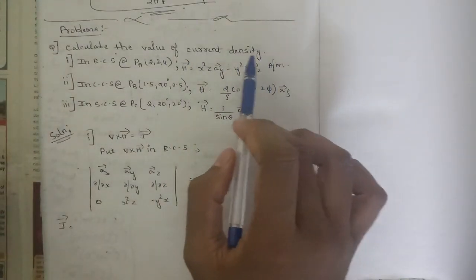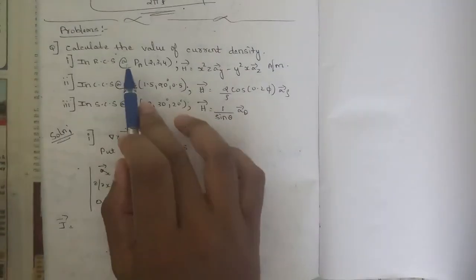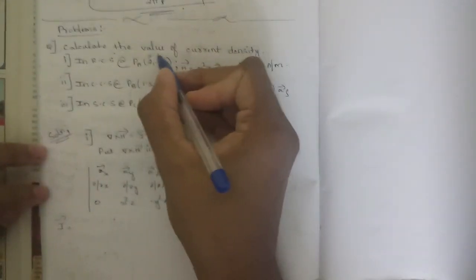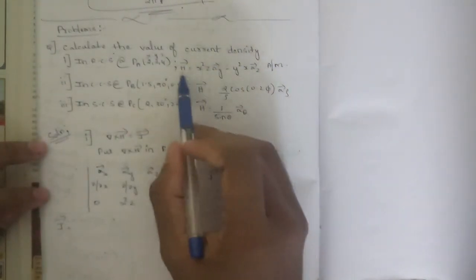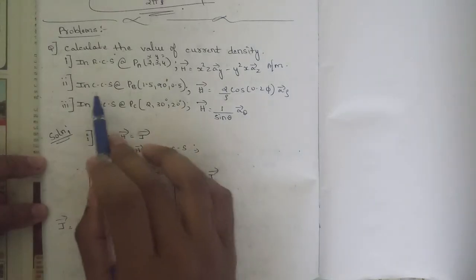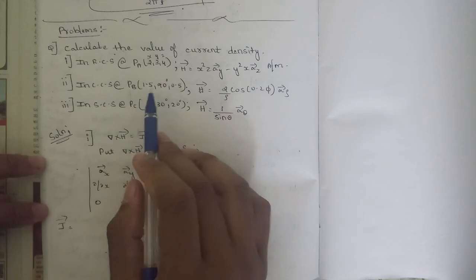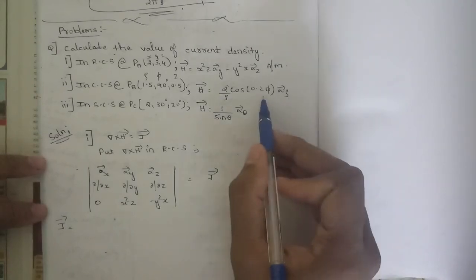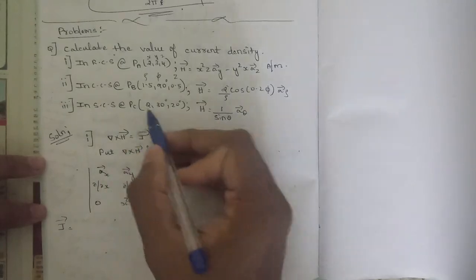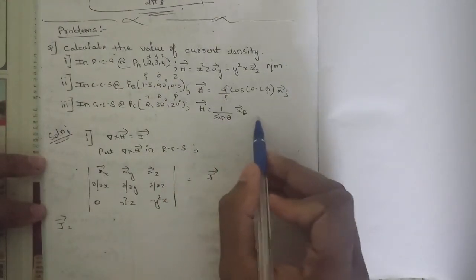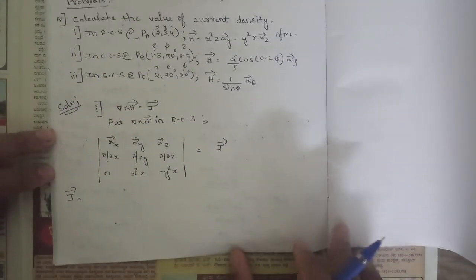The first problem: calculate the value of current density in three sub-questions. First, in rectangular coordinate system at point P_A = (2, 3, 4) representing x, y, z, with H = x²z · a_y − y²x · a_z. Second, in cylindrical coordinate system at P_B = (1.5, 90°, 0.5) where ρ, φ, z, with H = (2/ρ)cos(0.25) · a_φ + 0.25 · a_ρ. Third, in spherical coordinate system at P_C = (2, 30°, 20°) with H = (1/sinθ) · a_θ.